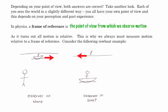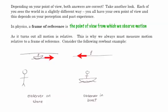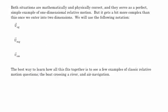So that's a classic example of relative motion. We can describe it algebraically, but that's not necessarily important. It's just that the velocity of the boat in one frame of reference is equal to the negative velocity of the guy on the shore in the other frame of reference. And so both situations are mathematically and physically correct. And they serve as a very simple example of one-dimensional relative motion.